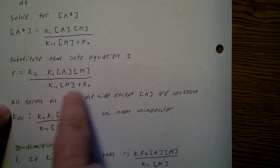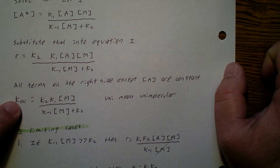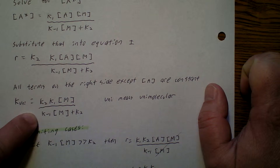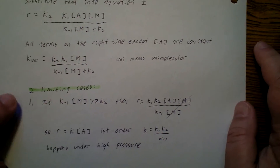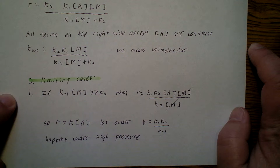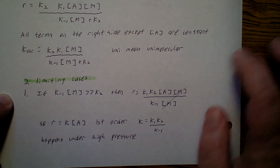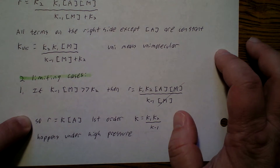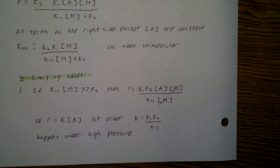Now all these terms on the right, except for the concentration of A, are constant. Now we have K for the unimolecular reaction — K_uni = K2·K1·[M] / (K₋1·[M] + K2). Now there are two limiting cases. One: if K₋1[M] is much greater than K2, then R = K2·K1·[A] / K₋1. The concentration of M's cancel out, so we get R = K[A], which is a first-order reaction. K = K1·K2 / K₋1. This is what happens under high pressure.